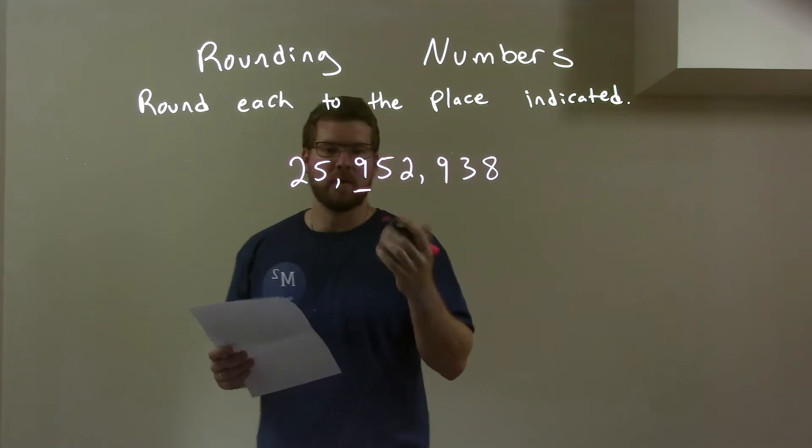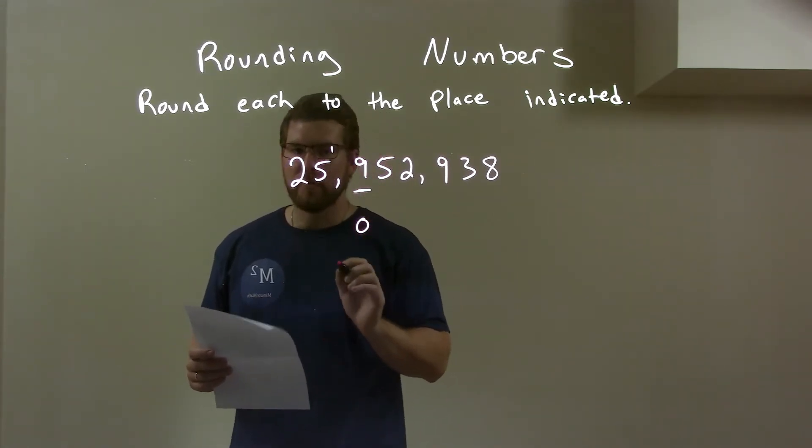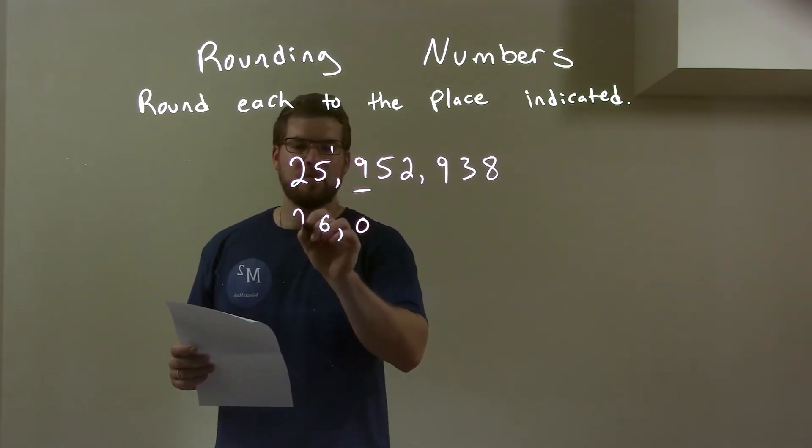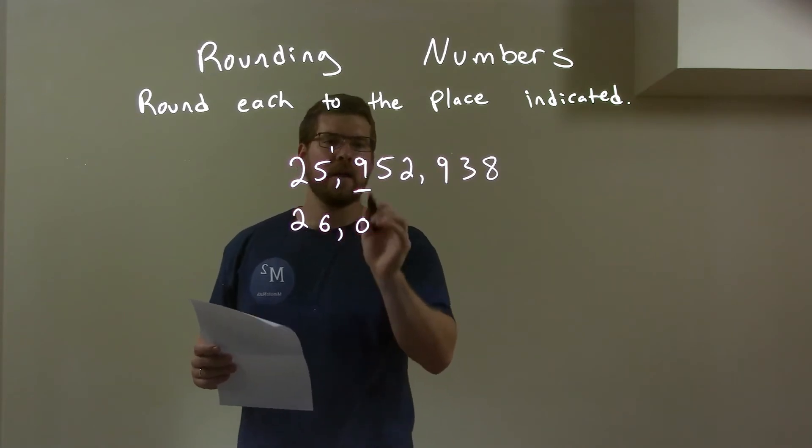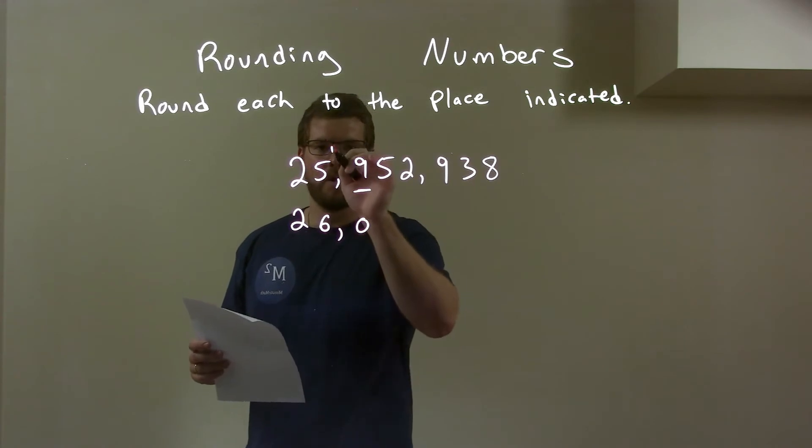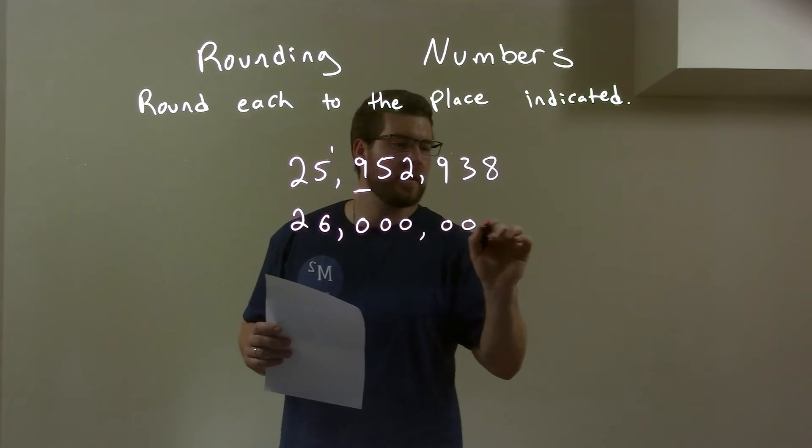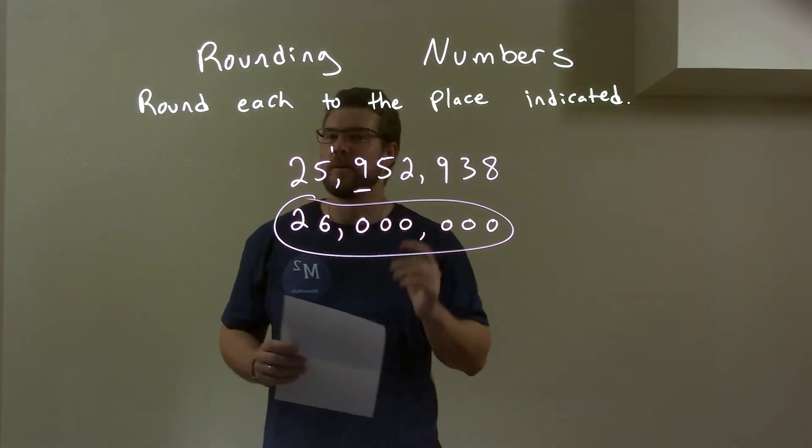Well, 1 up past 9 is 0, so a 0 is going to go there and we're going to add a 1 to that 5. So the 5 adds 1 to be a 6. The 2 comes down. And then once we've done that, so 259 has been rounded up the 9 into a 10, so the 0, 1 up there, adds up the 5 as a 6. We have 0s the rest of the way. And there we have our final answer of 26 mil.